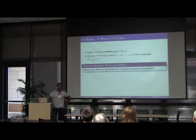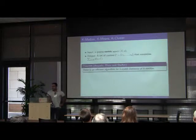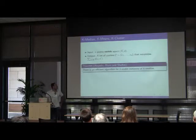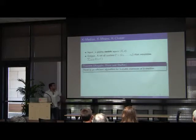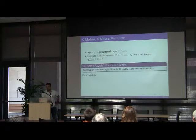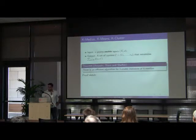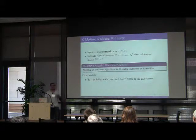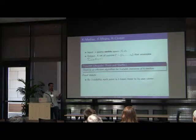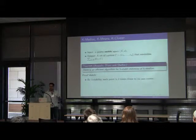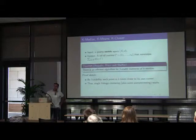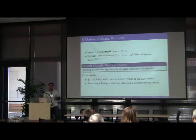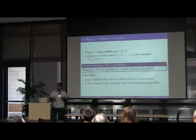Here we have a nice result by Awasthi, Blum and Sheffet, claiming that there is an efficient algorithm for three stable instances for k-medians. It's also true for k-means. I'll try to describe a sketch of the proof. The first step is to show that three stability entails that every point is three times closer to its own center than to the other centers. And using this property it is possible to show that the single linkage process plus some processing entails the optimal solution of k-medians.